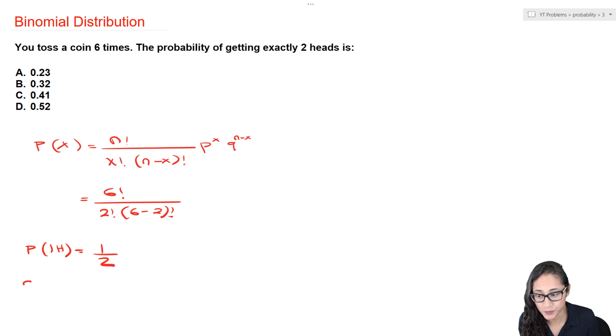Now to find Q, we said earlier, Q is the probability of failure, which is just one minus the probability of heads. So the Q of one head or the probability of failure of getting one head is just going to be one minus half, which is half.